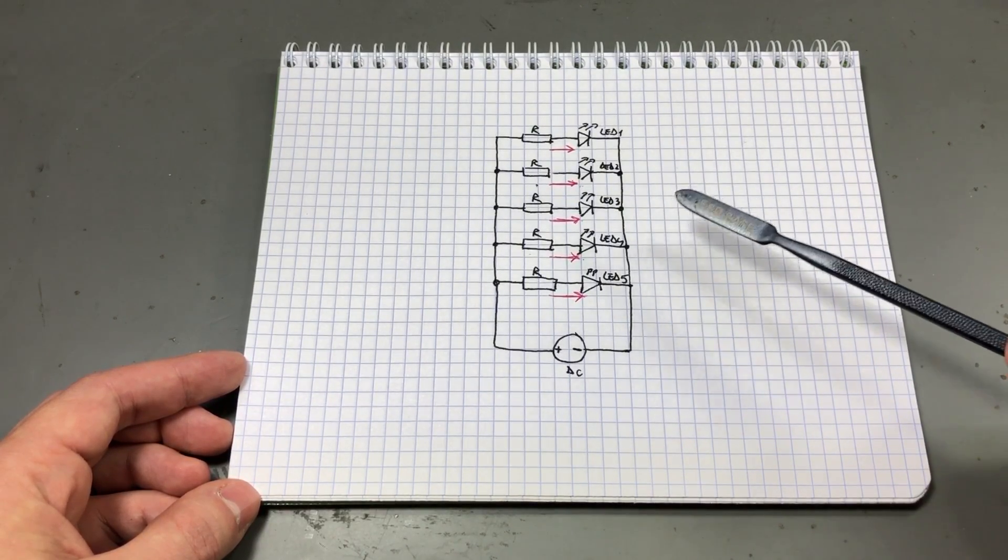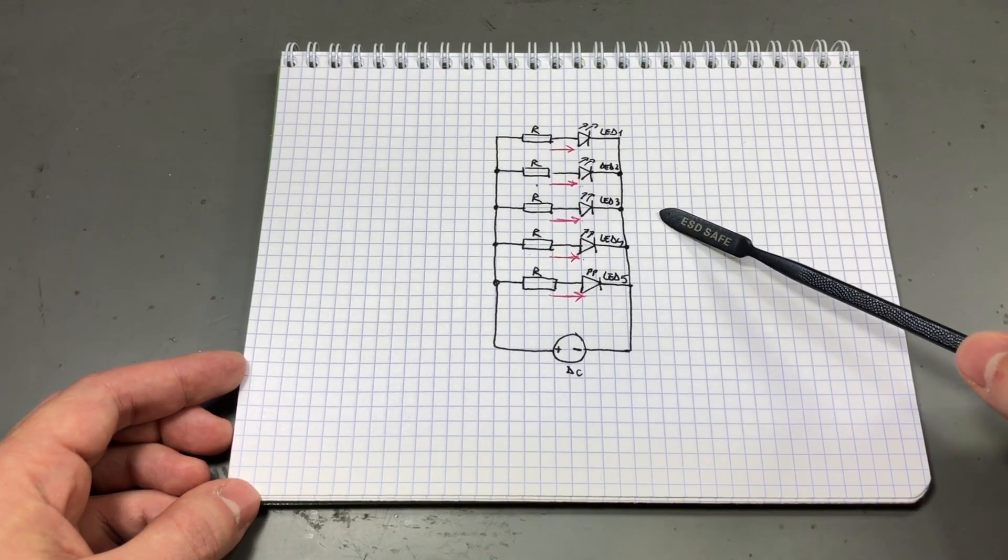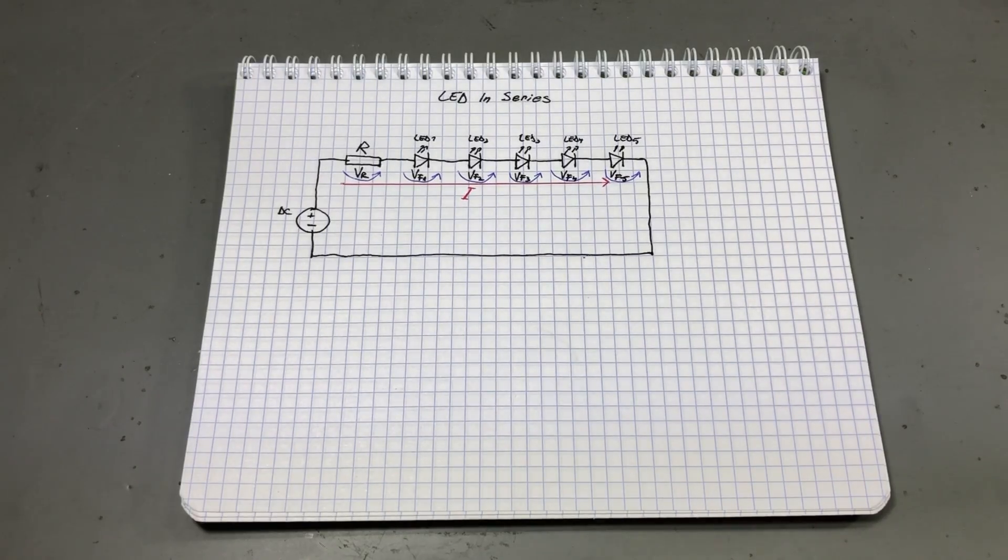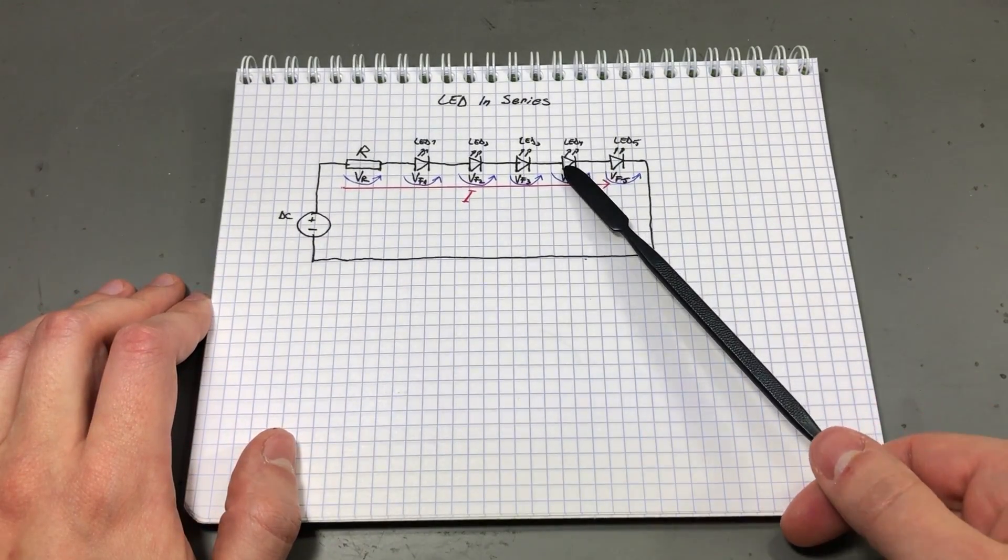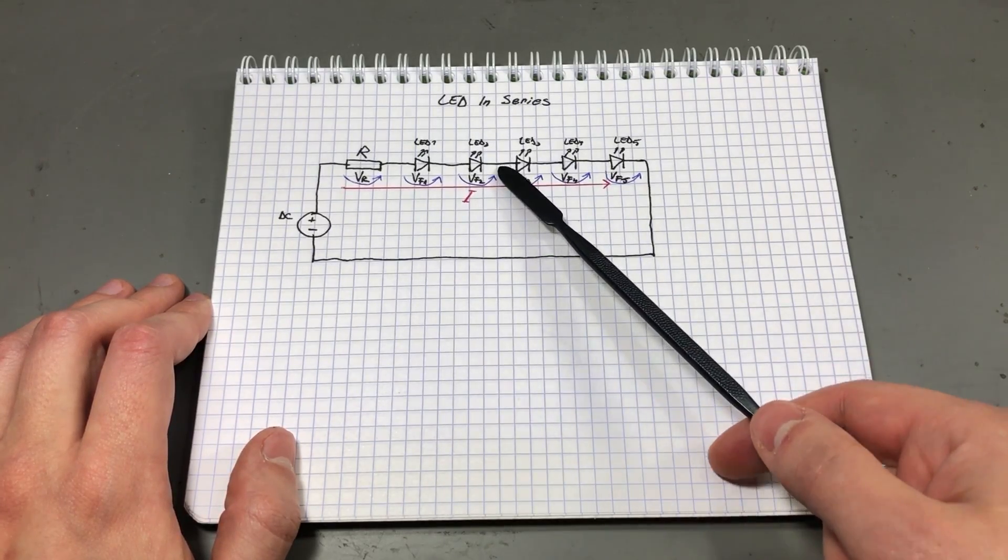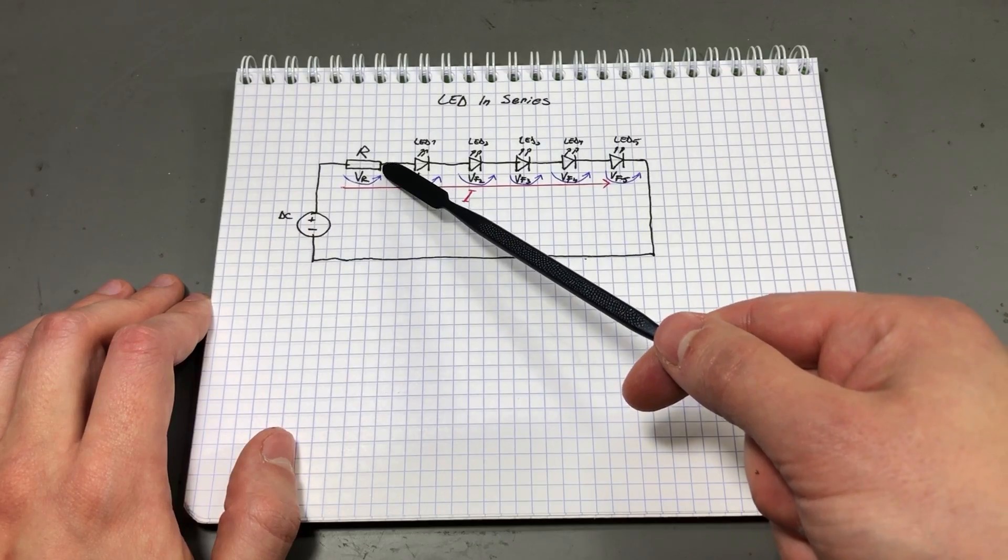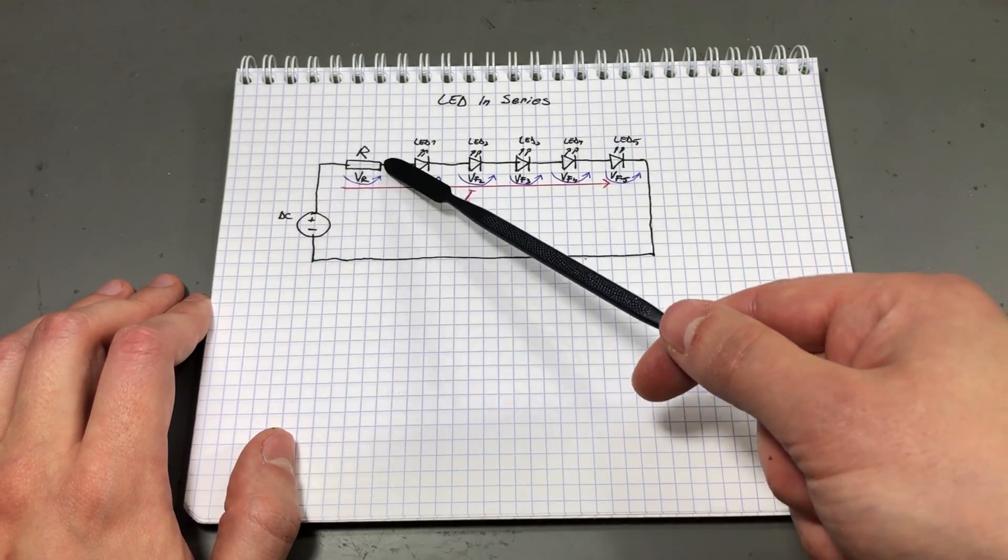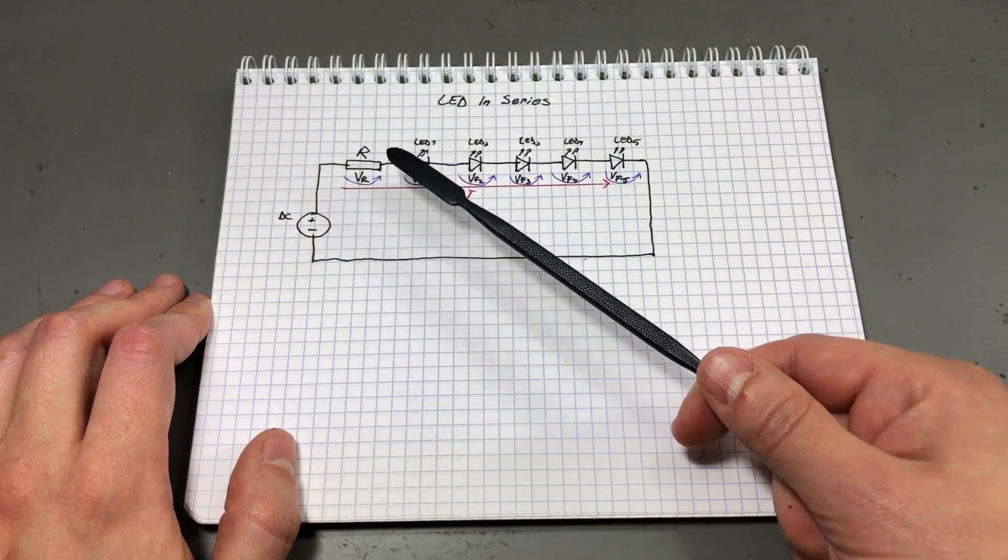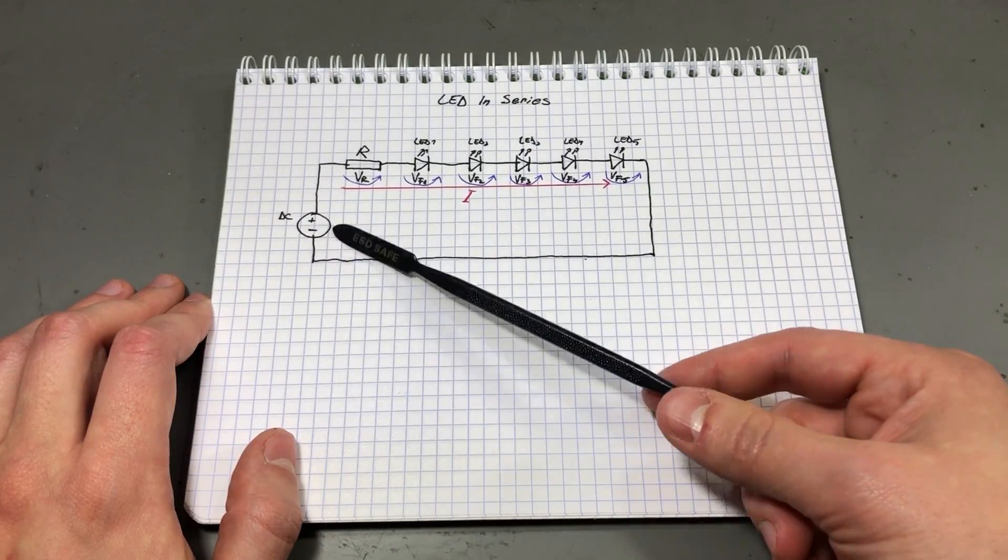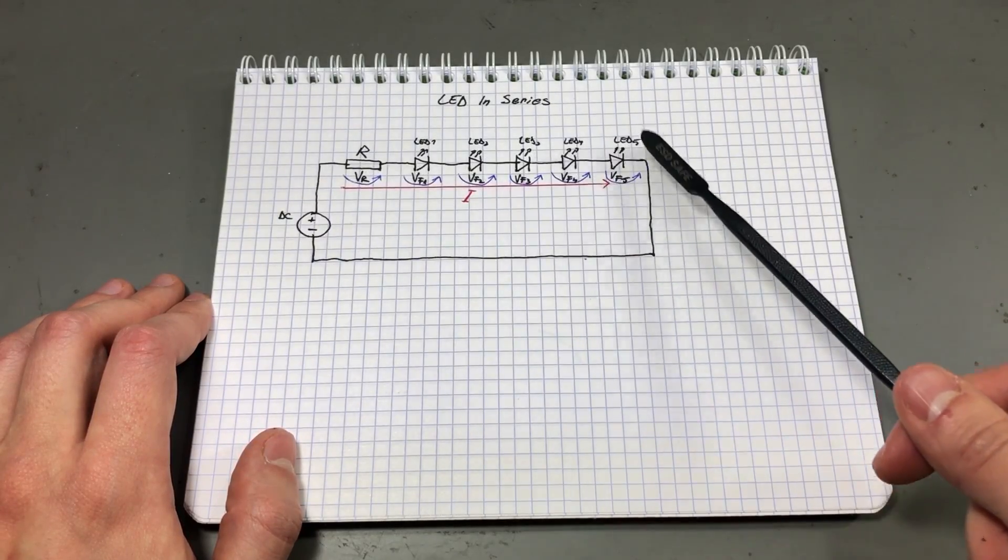So the best way to connect multiple LEDs to obtain the same current driving each LED would be in series like I have drawn here. You connect the 5 LEDs that we had earlier in series and you drive them with a constant voltage source. Same as before we're limiting the current with a resistor. Our drive voltage would have to be higher because we would have to accommodate for the entire string of LEDs.